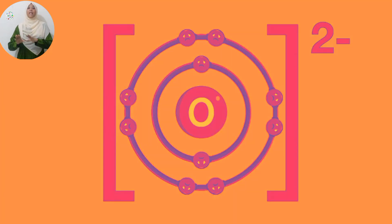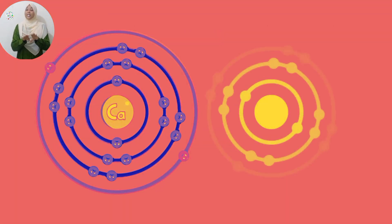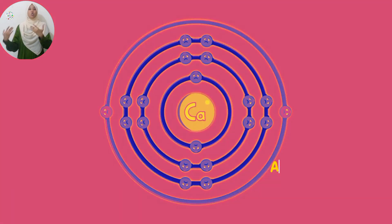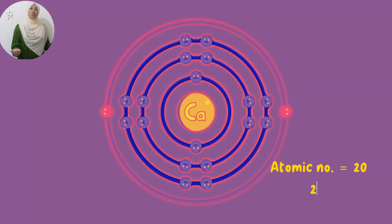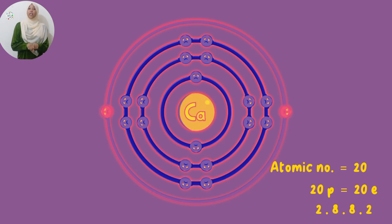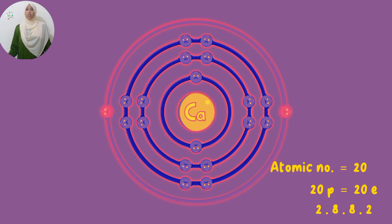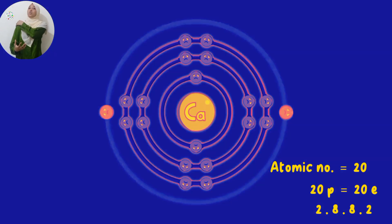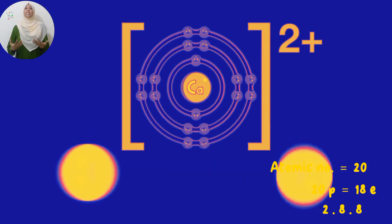Moving on to the next example: calcium chloride. Calcium has an atomic number of 20, so 20 protons equals 20 electrons. Electron configuration: 2, 8, 8, 2. So calcium has 2 valence electrons, and as with most metals, it's going to lose these valence electrons when it forms an ion. So calcium will lose its valence electrons to form the calcium ion.